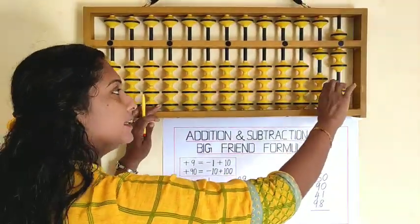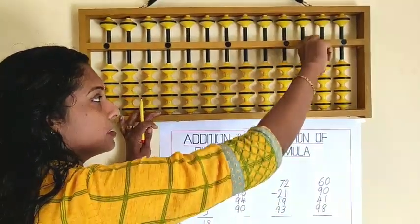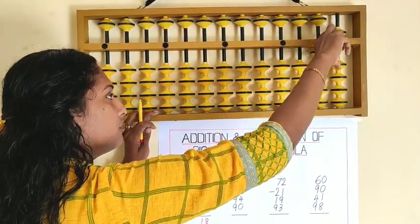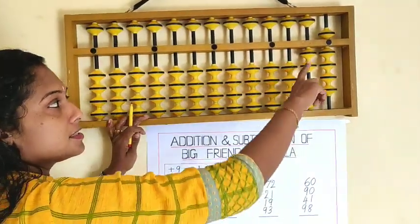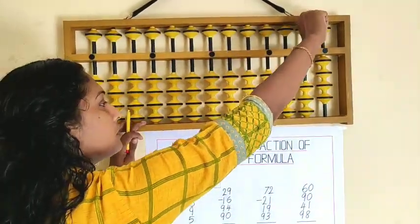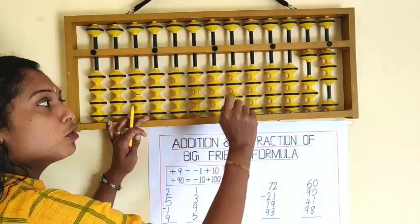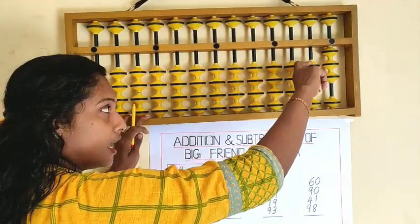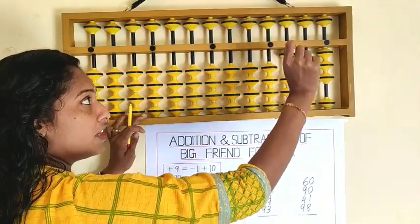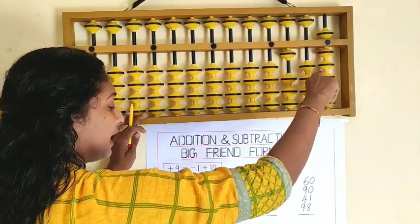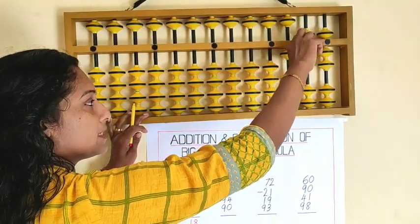The next sum uses the 10's formula. Let's say 29, minus 16, minus 10, 15, 16, plus 94. What is the formula for plus 90? Minus 10 plus 100. Plus 4 — the small friend formula for plus 4 is plus 5 minus 1. Plus 90 — we can do directly plus 90.